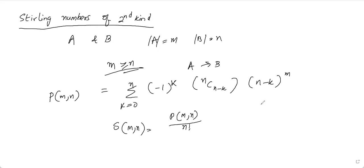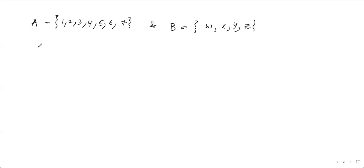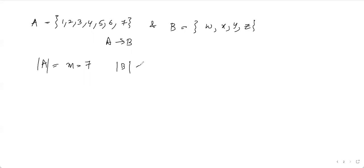Let us solve a problem based on this. We have set A which contains elements one, two, three, four, five, six, and seven, and set B which is {w, x, y, z}. Let us find the number of onto functions from A to B.